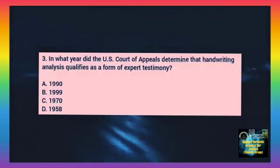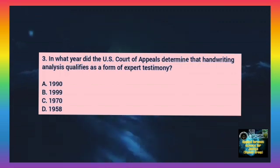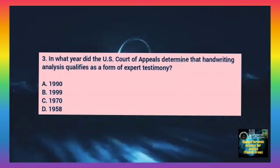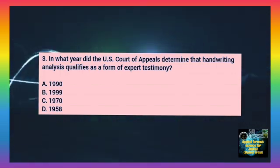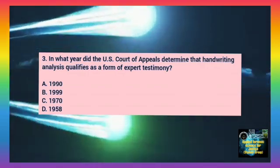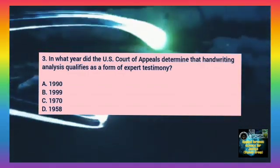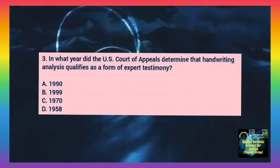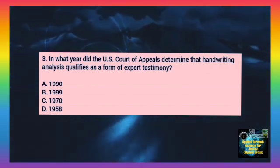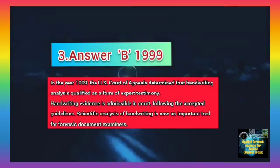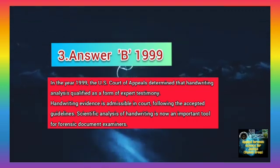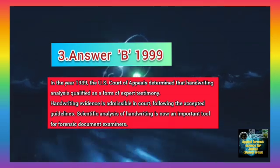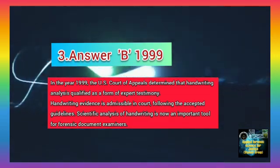Question number 3. In what year did the US Court of Appeals determine that handwriting analysis qualifies as a form of expert testimony? Option A: 1990. Option B: 1999. Option C: 1970. Option D: 1958. The correct answer is B, 1999. In the year 1999, the US Court of Appeals determined that handwriting analysis qualified as a form of expert testimony.